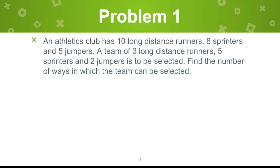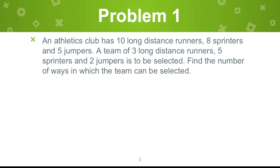Let's start with problem one. An athletics club has ten long distance runners, eight sprinters and five jumpers. A team of three long distance runners, five sprinters and two jumpers is to be selected. Find the number of ways in which the team can be selected.